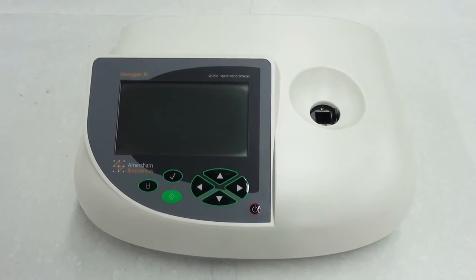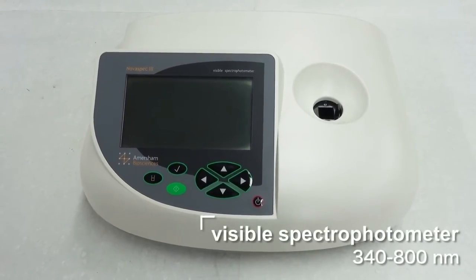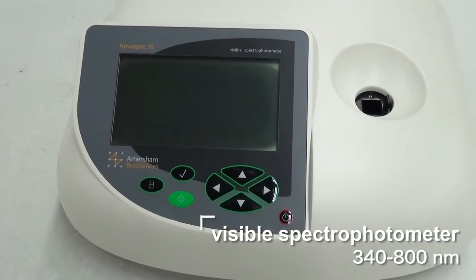The commonly available types include the visible spectrophotometers equipped with a halogen lamp.